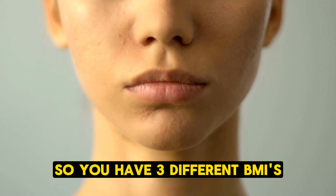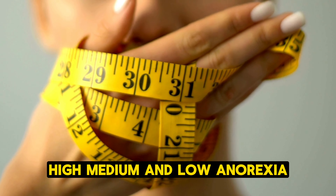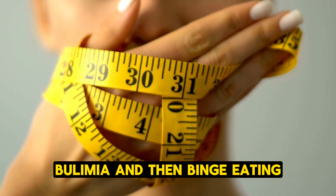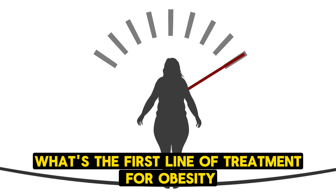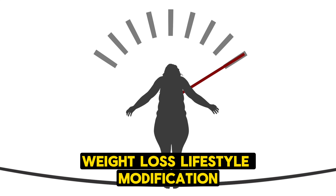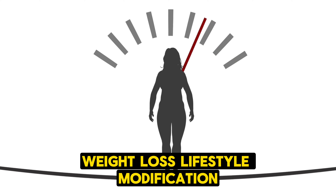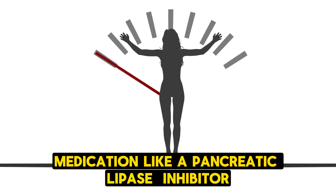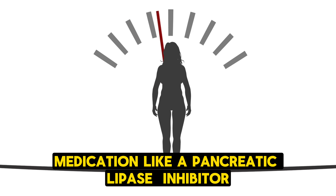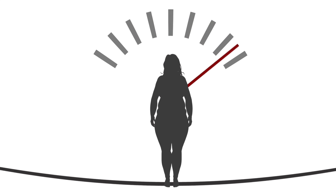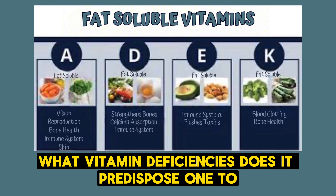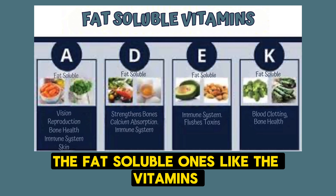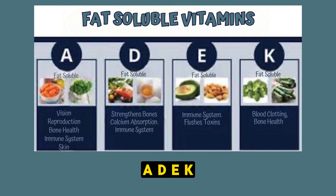To summarize: three different BMIs — high for binge eating, normal for bulimia, low for anorexia. First-line treatment for obesity is weight loss and lifestyle modification. Second-line is medication like a pancreatic lipase inhibitor, which predisposes to deficiencies of fat-soluble vitamins A, D, E, K. Bariatric surgery is indicated when BMI is greater than 40, or greater than 35 with significant comorbidities.